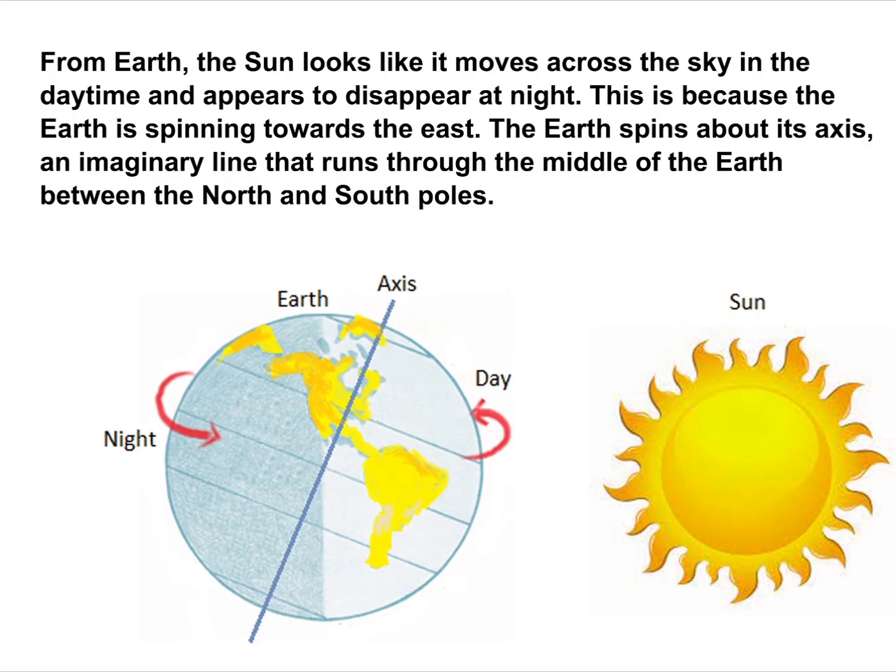The Earth spins about its axis, an imaginary line that runs through the middle of the Earth, between the North and South poles.